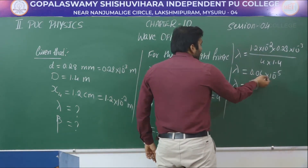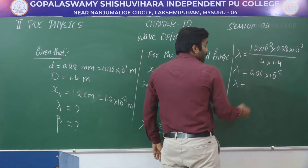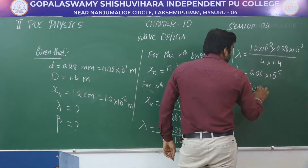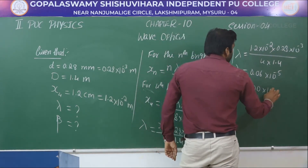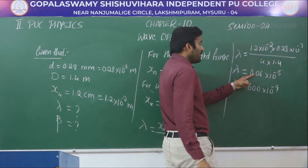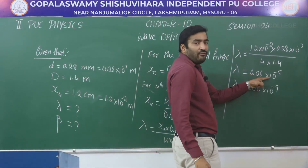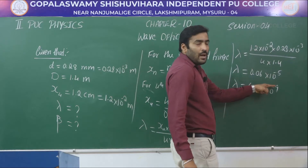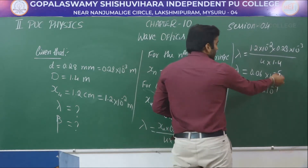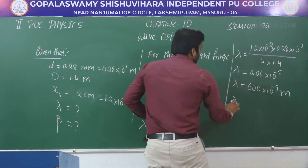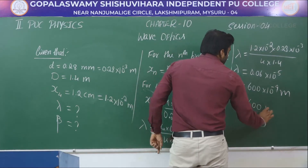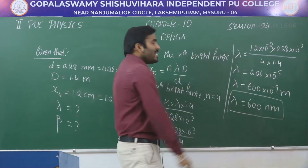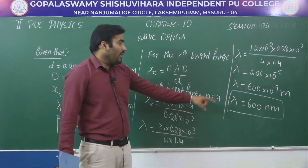Shifting the decimal, we get 600 × 10⁻⁹ meter, or lambda is equal to 600 nanometer. So the wavelength of light used is 600 nanometer.